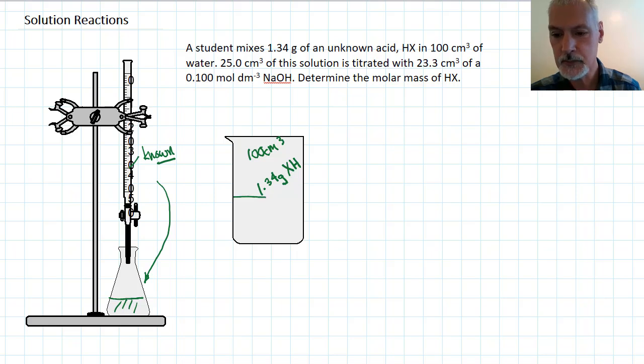We take a portion of this solution, not all of it, 25 mils of it, and place it down here in a flask. So this becomes our unknown.